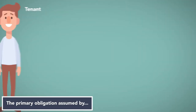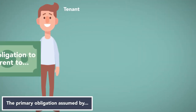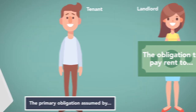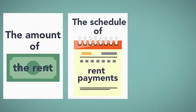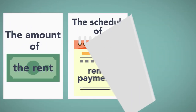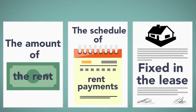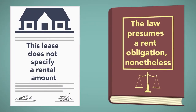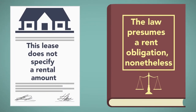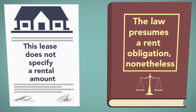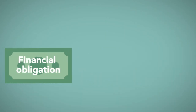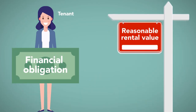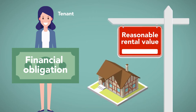The primary obligation assumed by the tenant is the obligation to pay rent to the landlord. The amount of the rent, as well as the schedule of rent payments, are fixed in the lease. If the lease does not specify a rental amount, the law presumes a rent obligation nonetheless. The financial obligation of the tenant in such situations is a reasonable rental value of the property in question.